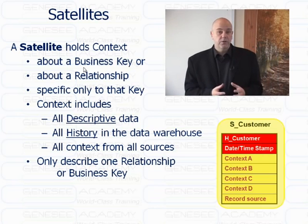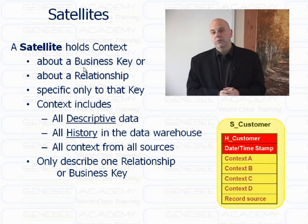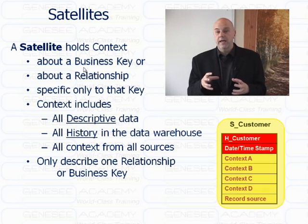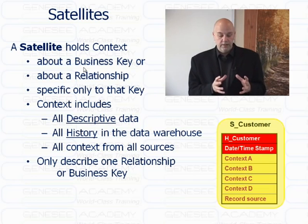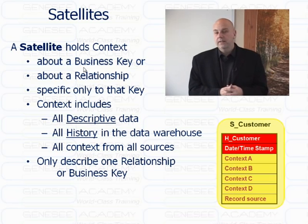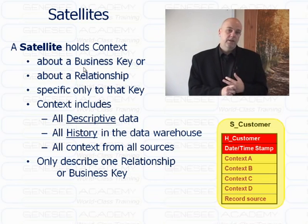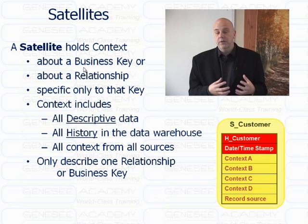Everything else is managed by the satellite. The satellite holds the context about the key or the relationship. It's specific only to the one thing that it's attached to — for example, a customer hub has a satellite for address, and that satellite can only define address for the customer, nothing else. It's descriptive information that can only describe the key it comes from — the hub or the link that it describes. Context includes all the descriptive data and, equally as important, all the history. When a history record comes in and something changes, in a warehouse I keep the old one — all that history about what came before is only maintained in the satellite.